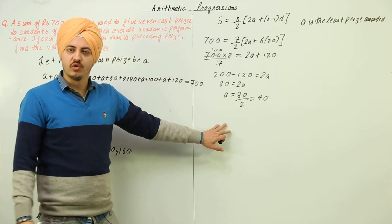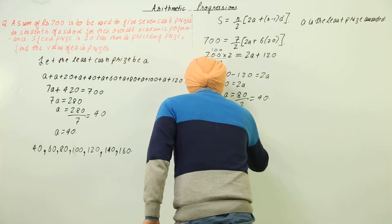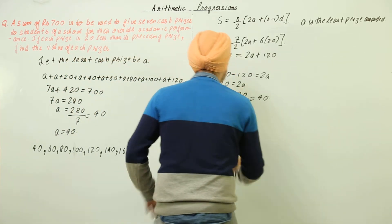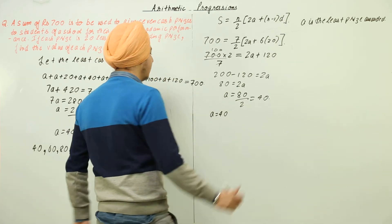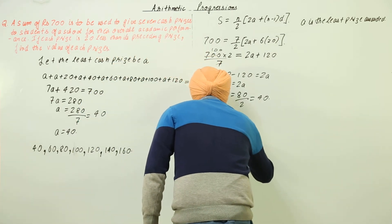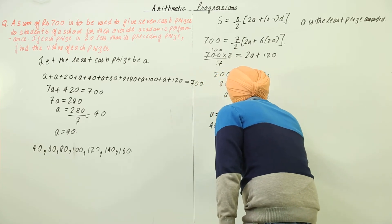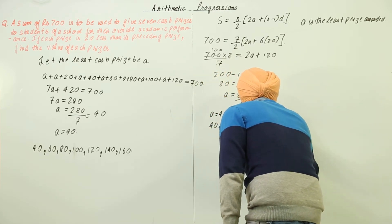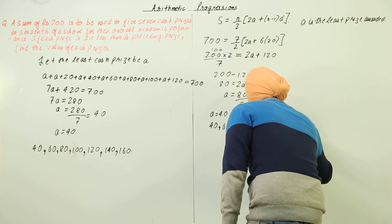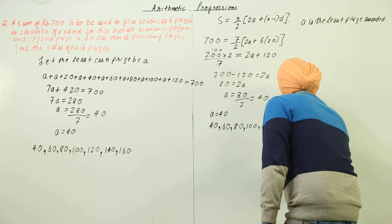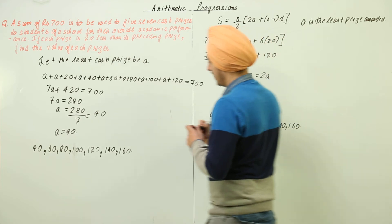Now again if we know that a is equal to 40, if a is equal to 40, this is the first and the least cash price. So the next is going to be again 60, 80, 100, 120, 140 and 160.